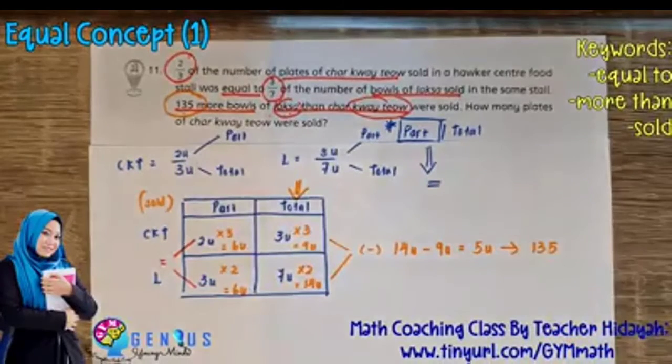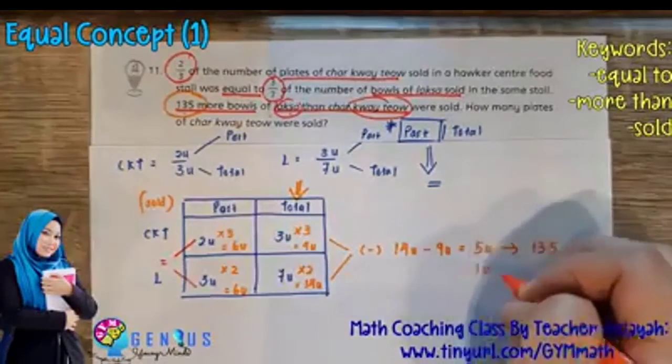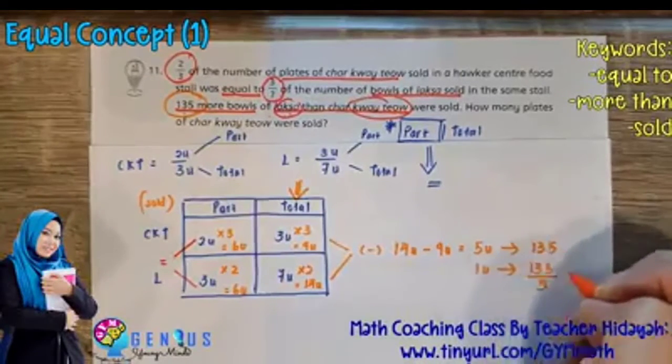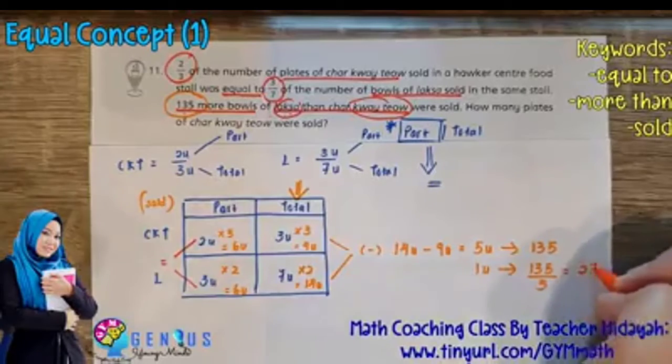So what do we do next from this question? We go and find out your 1 unit. So 1 unit is 135 divided by 5. And this will give me 27.